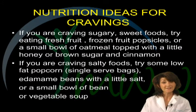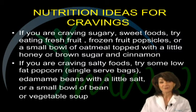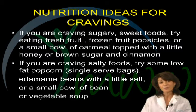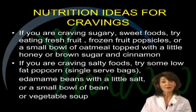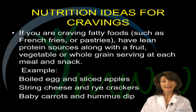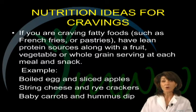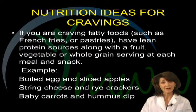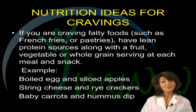Some nutrition ideas for cravings: if you are craving sugary and sweet foods, try eating fresh fruit in season, frozen fruit popsicles, or even a small bowl of oatmeal topped with honey or brown sugar and cinnamon. If you are craving salty foods, try some single-serving low-fat popcorn, edamame beans with a little salt, or even a small bowl of vegetable or bean soup, which can really take the edge off cravings and appetite. If you are craving fatty foods such as french fries or pastries, have lean proteins such as fish or chicken, along with a fruit, vegetable, and a whole grain at each meal and snack. Examples include a boiled egg and sliced apples, string cheese and a few rye crackers, and baby carrots with hummus dip. And don't forget to keep well hydrated with plenty of water — people often confuse hunger with thirst.